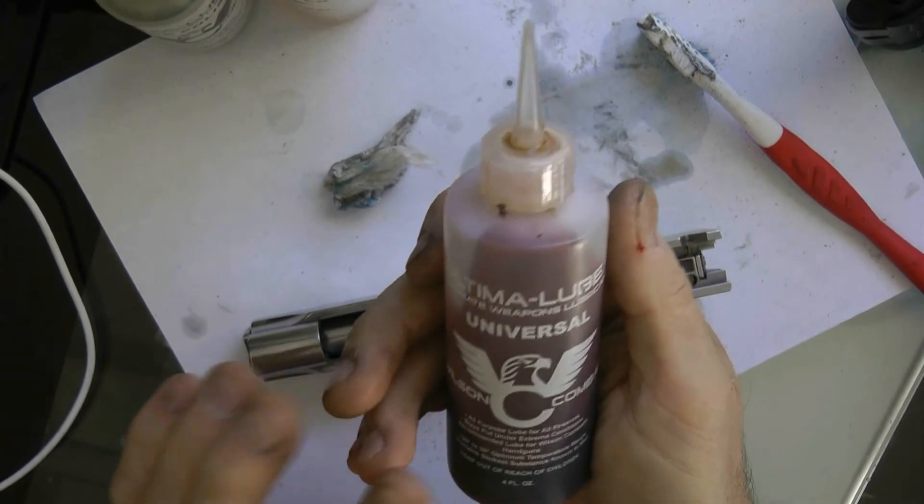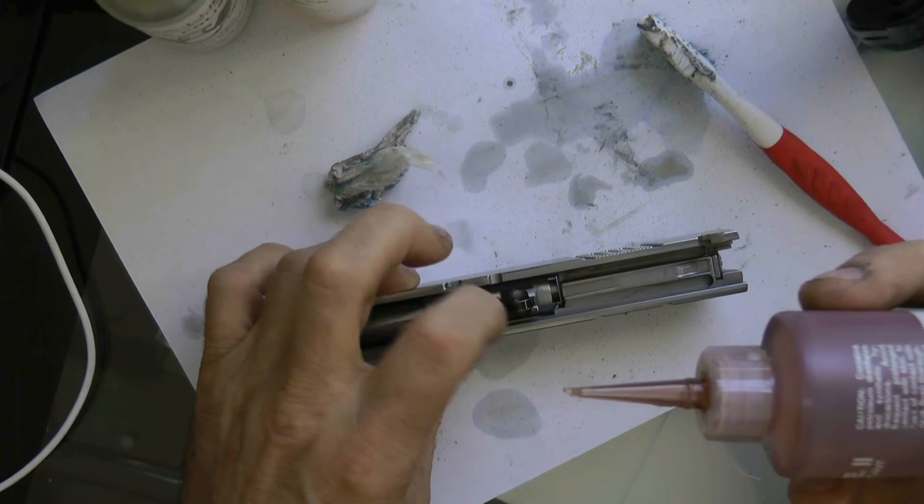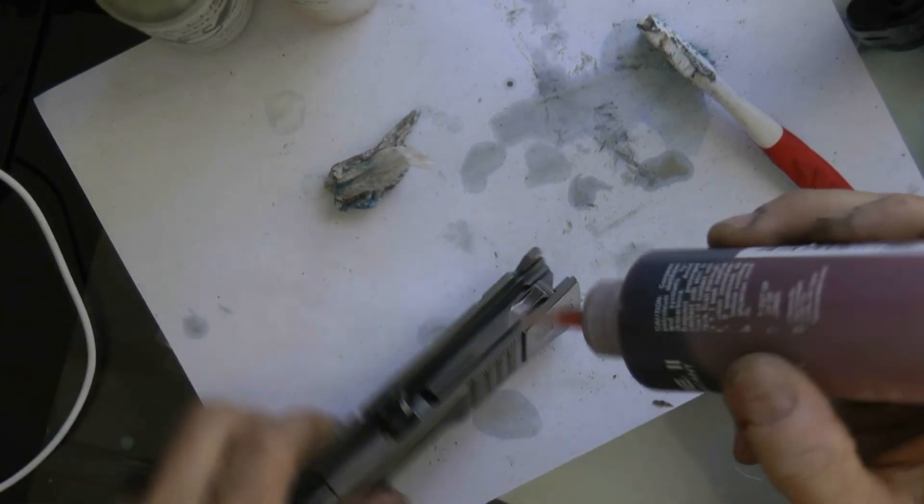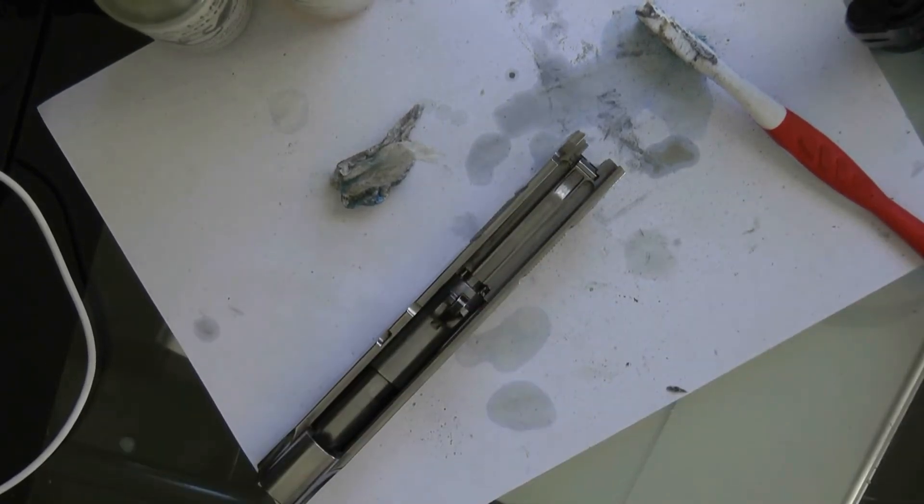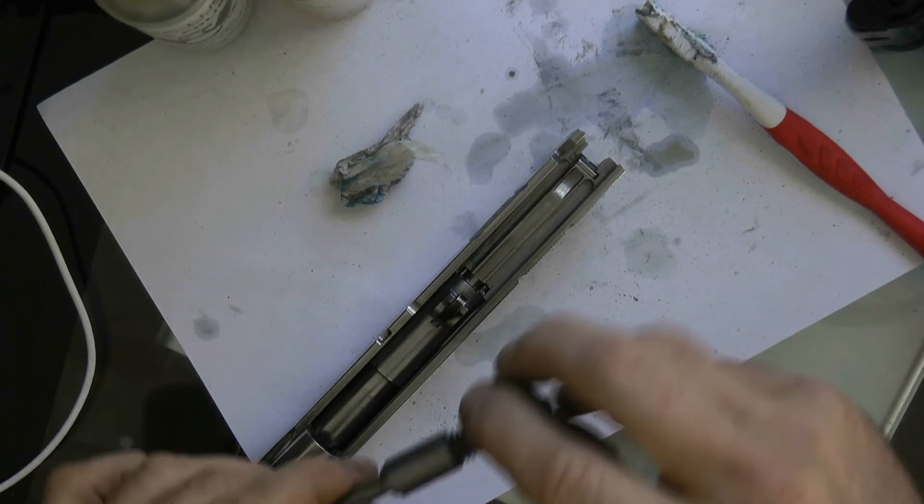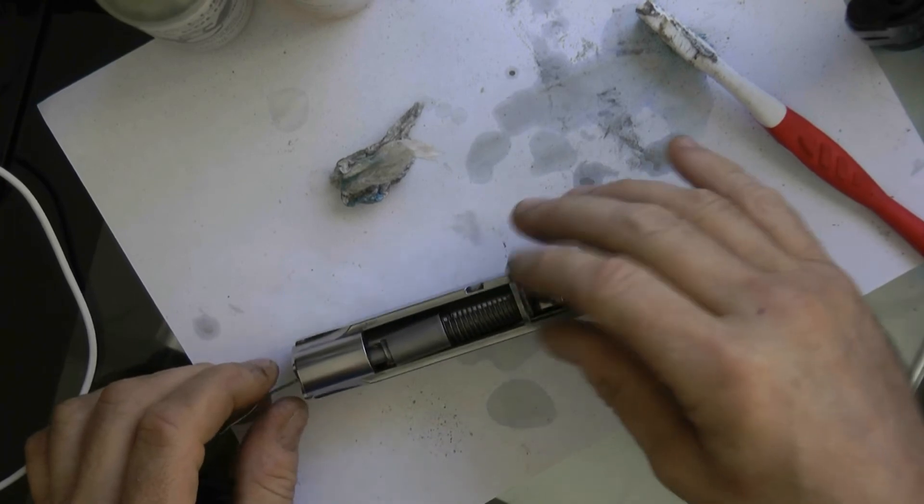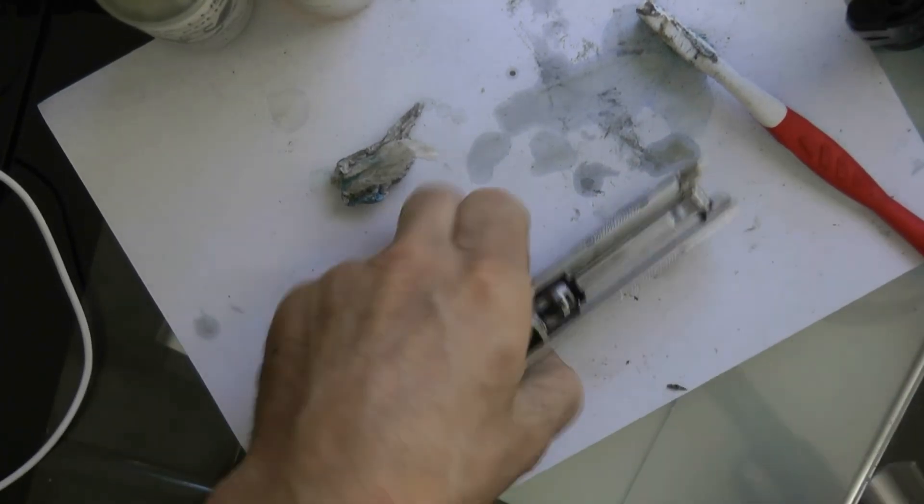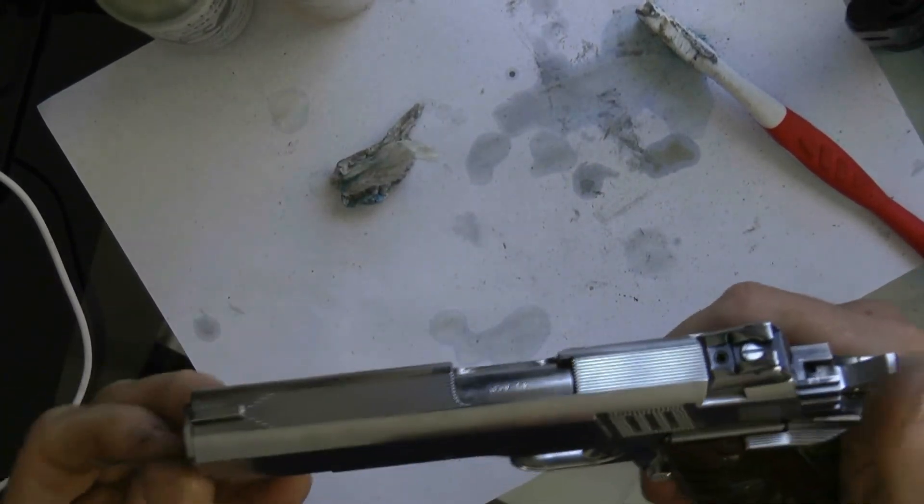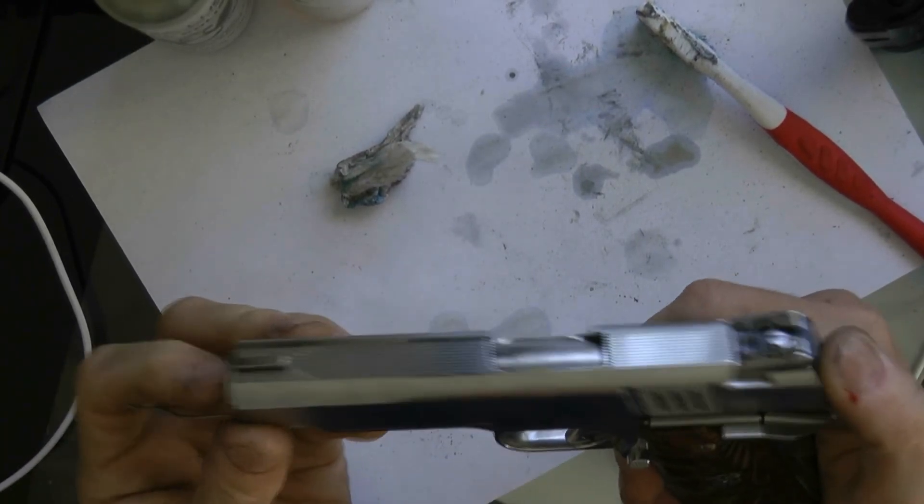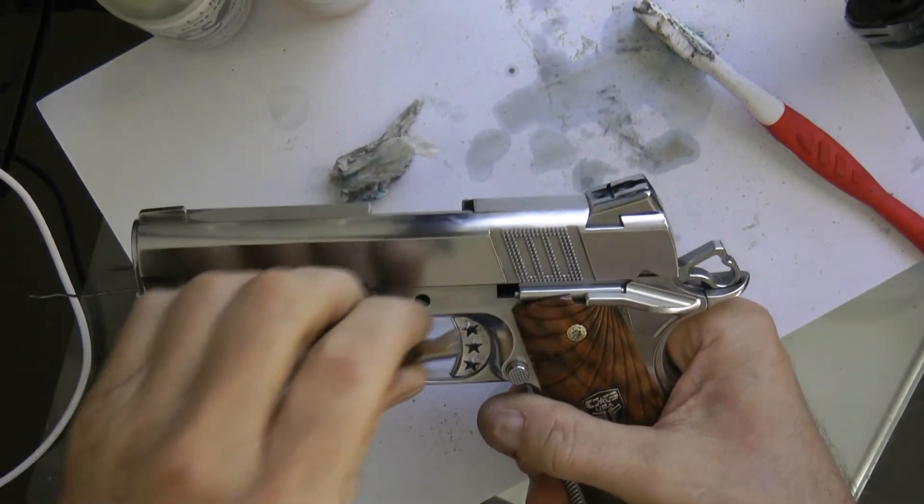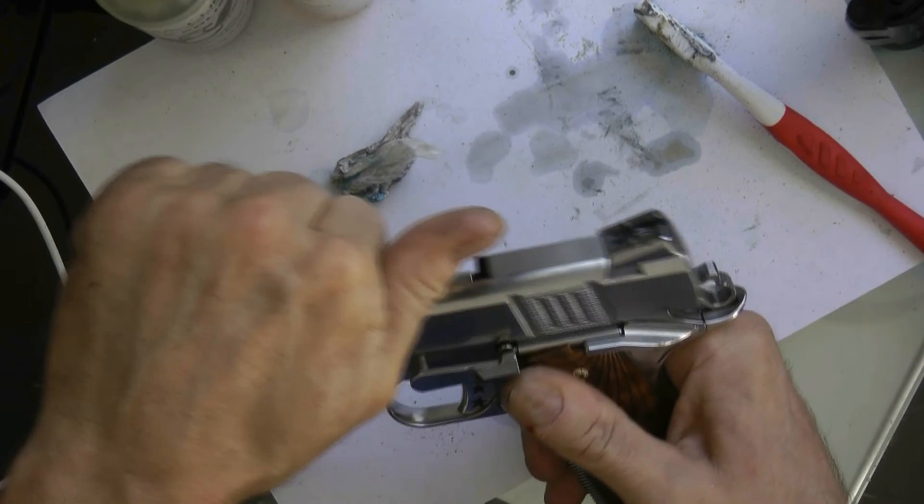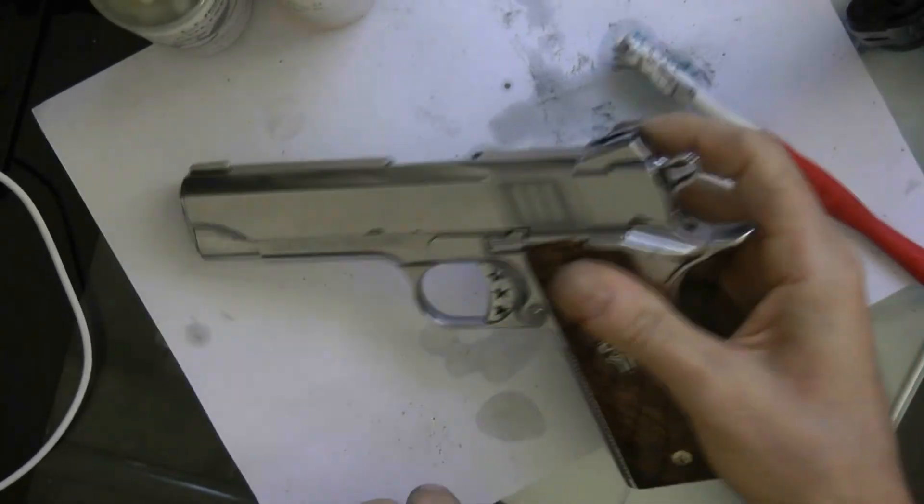For reassembly, I just use this universal weapons oil and put one drop there. You're only going to need like one drop in each rail. One drop there, that's all you need. And one drop. That's it. That's all you should really need for lubrication of the gun. Put your guide rod back in, flip over the bottom like this. That's all you do.